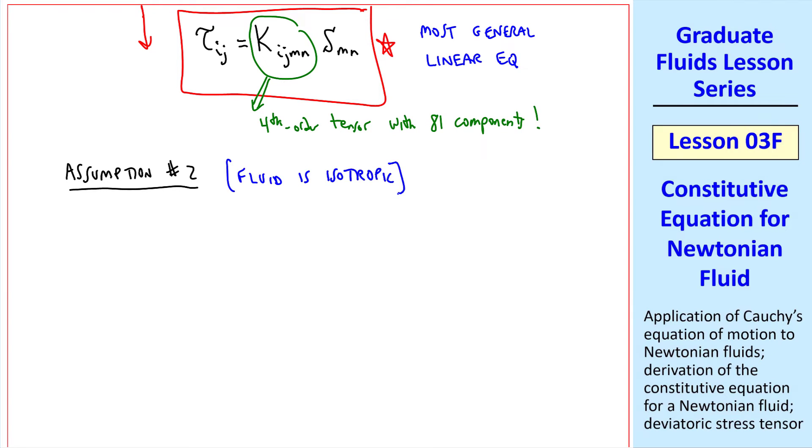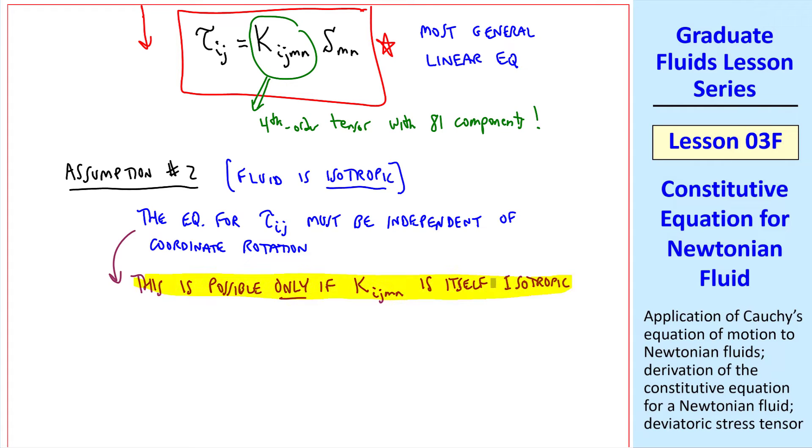In other words, the equation for tauij, or constitutive equation for the deviatoric part, must be independent of coordinate rotation. No matter what coordinate system we use, we need to get the same result. It can be shown that this is possible only if our coefficient tensor, kijmn, is itself isotropic. As an aside, deltaij, the Kronecker delta function, is the only second-order isotropic tensor.